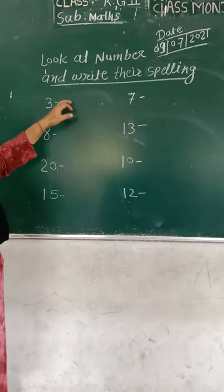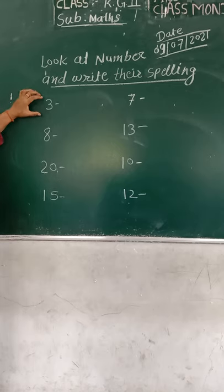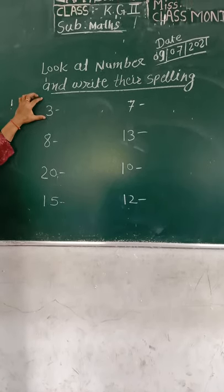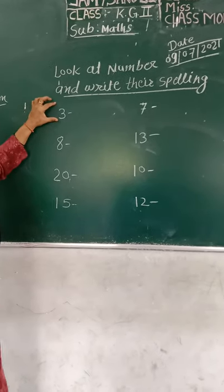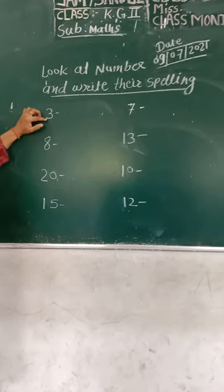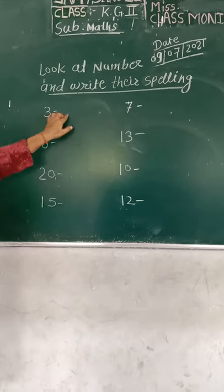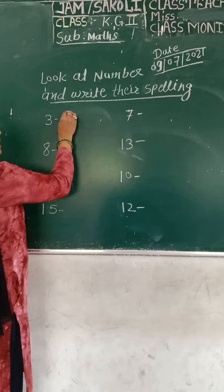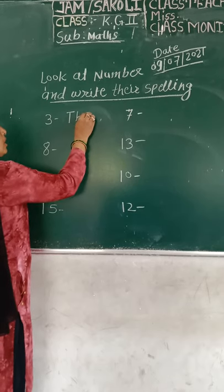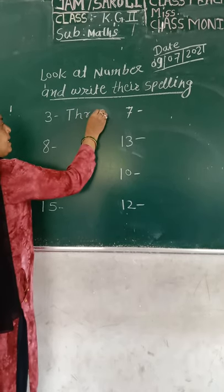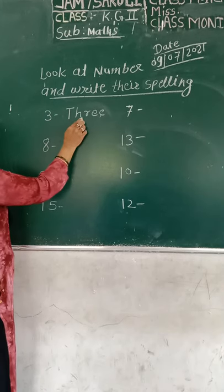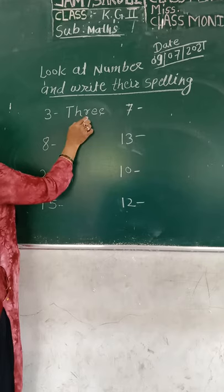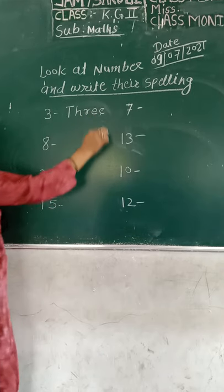Look at the number. What do you think? Number three. Three. Now you know spelling. What is spelling? T-H-R-E-E. Three. T-H-R-E-E. Three.